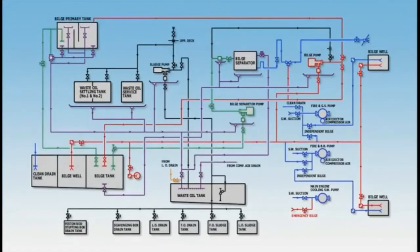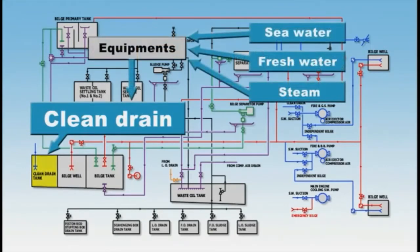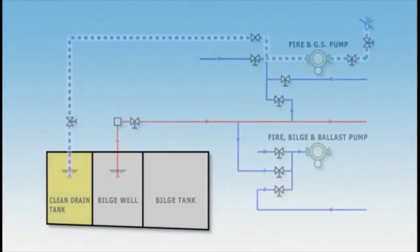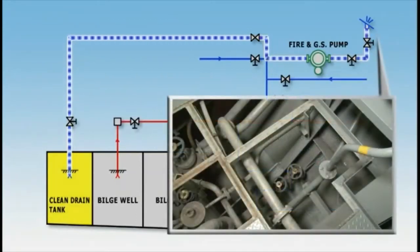We have outlined the drainage bilge and oily bilge treatment systems. Now we would like to briefly explain the clean drain treatment system, which is independent of these systems. Clean drain refers to drain that leaks from equipment used for seawater, fresh water, steam and the like, all of which are not normally contaminated by oil. Clean drain is collected into clean drain tanks and is then directly discharged overboard using a general service pump or similar equipment.